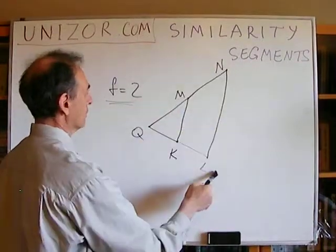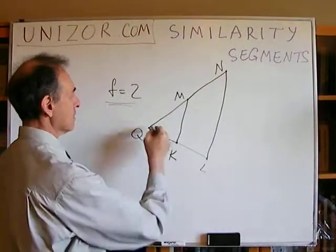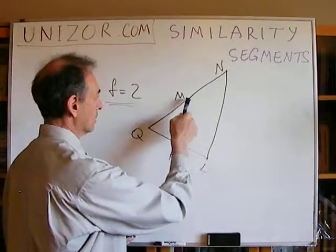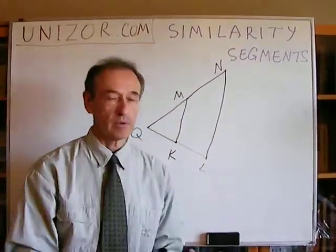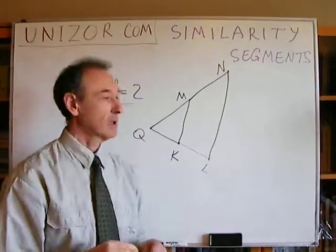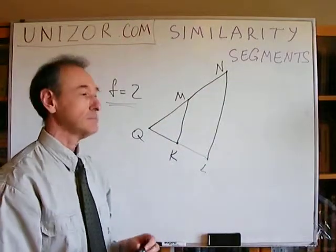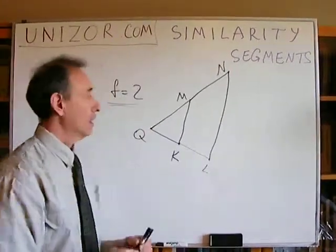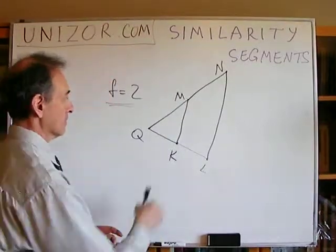Now consider this triangle, QNL. In case factor is equal to 2, it's really very easy to see that MK is a mid-segment of this triangle. It connects two midpoints of sides. And we know from the theorem about triangles that this particular segment MK, mid-segment, is half the size of the base. In this case, base is NL, which actually proves that in case our factor is equal to 2, any segment is stretched by the factor of 2. Any segment MK.